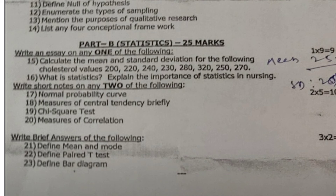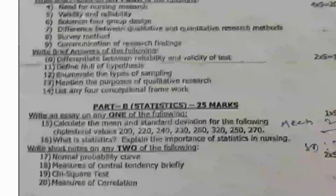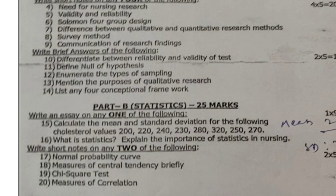Part A carries 50 marks and Part B carries 25 marks, totalling 75 marks in 3 hours. For time allotment, for every 25 marks allow 1 hour, so nursing research gets 2 hours and statistics gets 1 hour. You must not mix Part A answers in Part B and vice versa. Use a separate answer booklet for Part A and clearly write the heading 'Nursing Research', then separately submit Part B with the heading 'Statistics'.